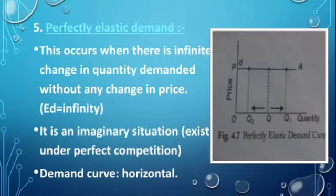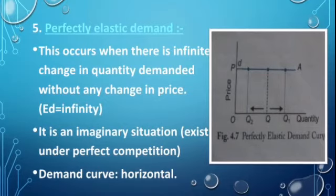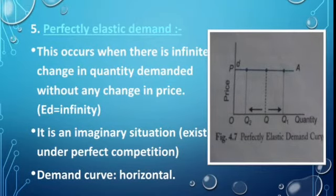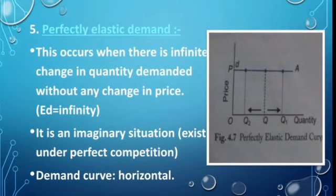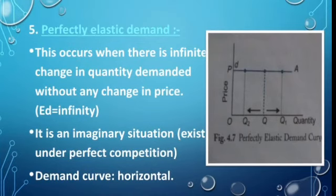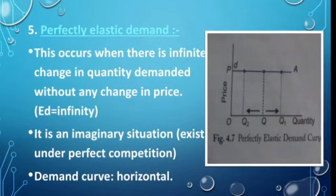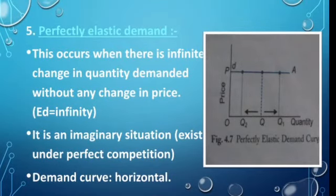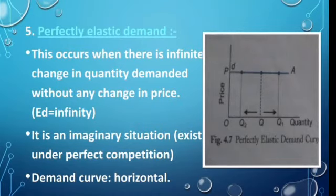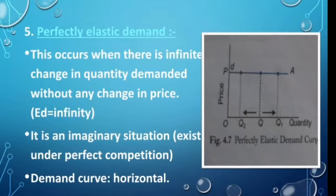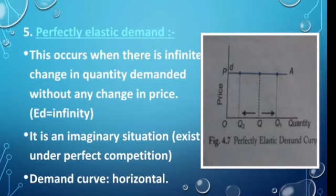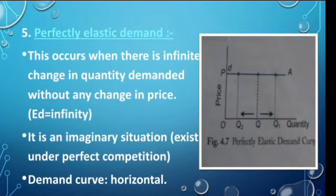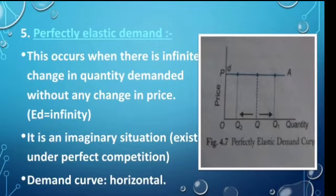Next in the last one hum dekhenge perfectly elastic demand. Perfectly elastic demand kya hai woh samjhate hain. This occurs when there is infinite change in quantity demanded without any change in price. Perfectly elastic demand hamari kab hogi? Jab aapke price mein koi bhi change nahi hai, but aapki quantity demanded mein apne aap change jaa raha hai. Toh iss tarah ki demand ko hum kahenge perfectly elastic demand. Aur yeh ek tarah se imaginary situation hai jo ki akar karti hai aapki perfect competition mein. Demand curve ka yahan pe shape hai woh flat hai — yani ki aapke quantity change hoti rahegi, but price aapka constant rahega P pe. Quantity aapki Q2, Q1 kabhi ho jayegi, quantity kabhi aapki zyada bhi ho jayegi, aur hoti hai infinity. Toh iss tarah ki case mein jo demand hoti hai woh kehlaati hai perfectly elastic demand.